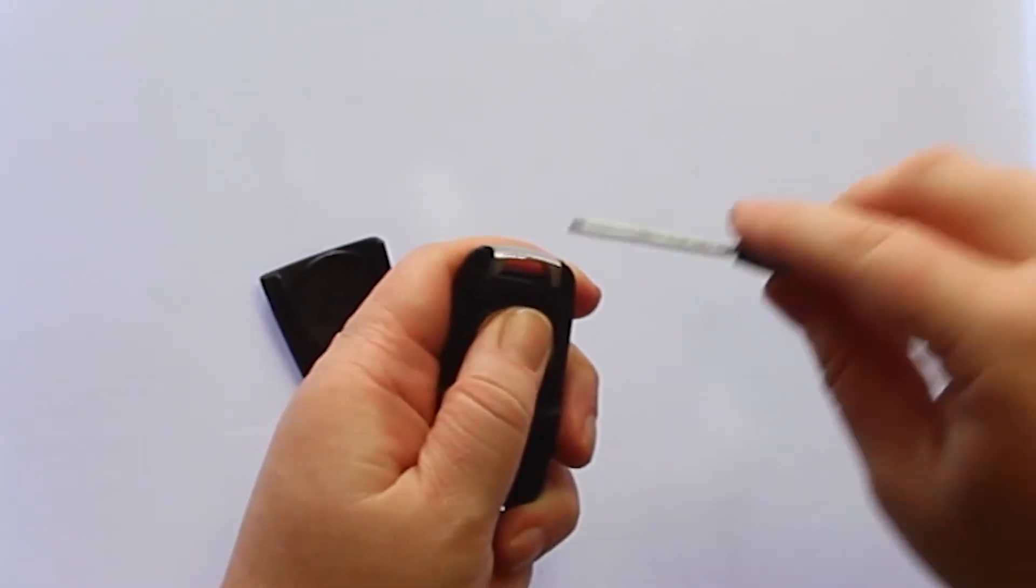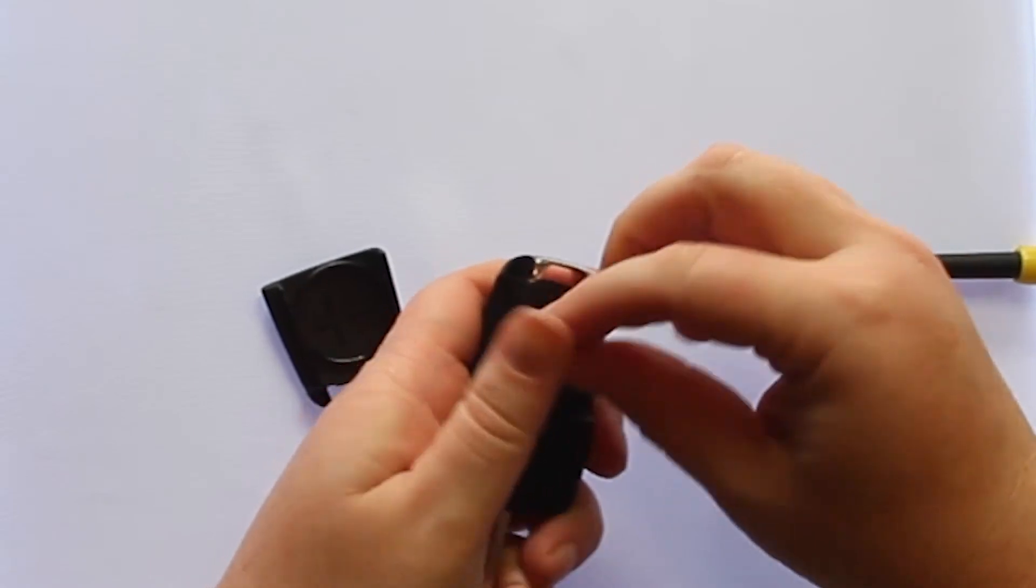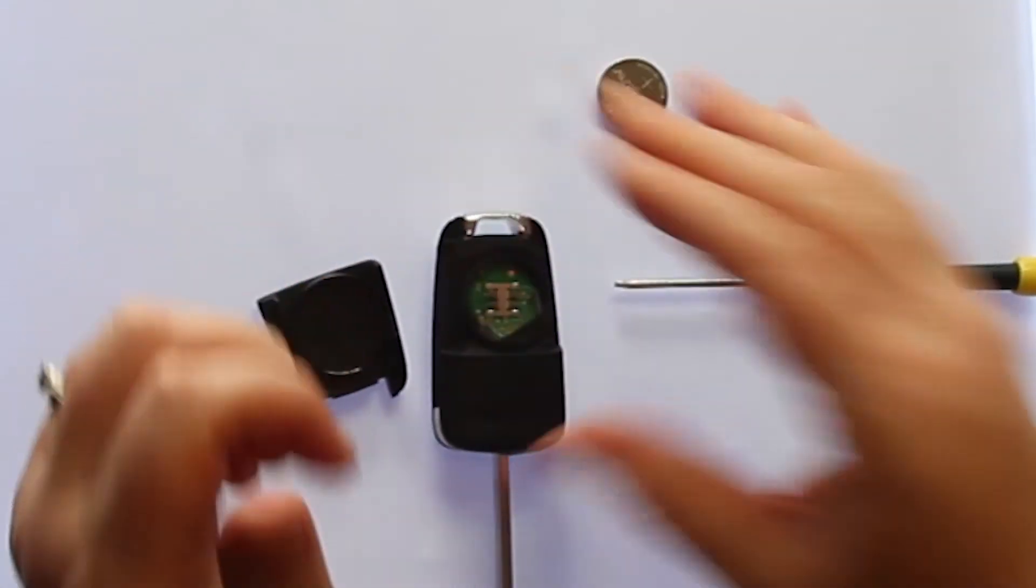You'll want to use your small flat head screwdriver to help get the battery out. Simply push down on the battery and use the screwdriver to help pop the battery out.